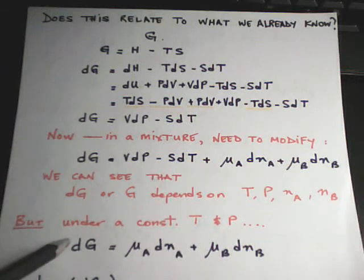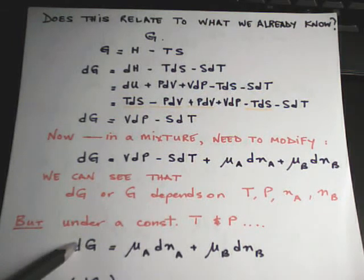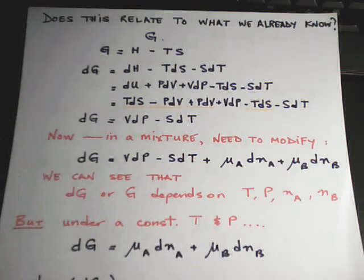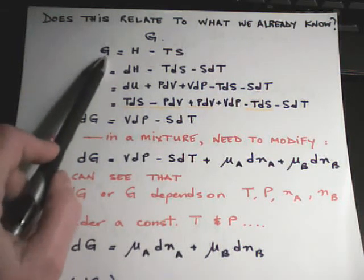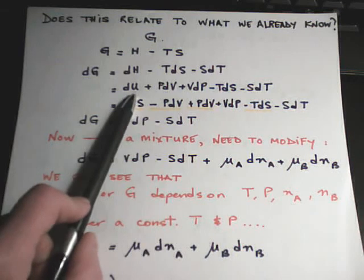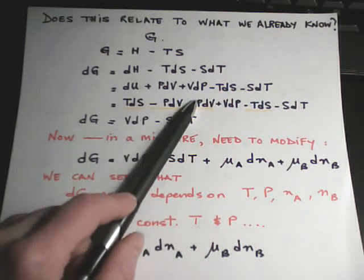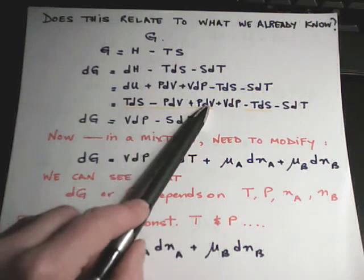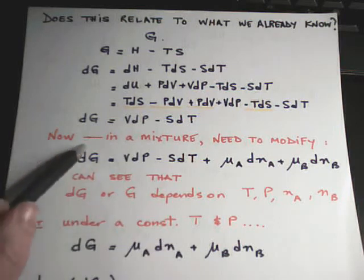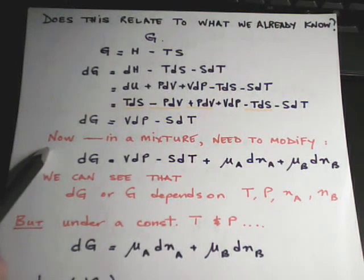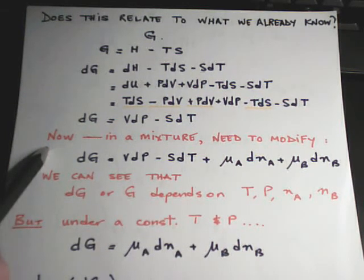This is covered in the textbook on the brief side, so let's make sense of it. We have G equals H minus TS, so DG equals DH minus SdT. But H equals U plus PV, so DH equals DU plus PdV plus VdP. And DU equals TdS minus PdV. Bringing those terms together and simplifying, we end up with DG equals VdP minus SdT. That tells us the Gibbs free energy depends on pressure and temperature.